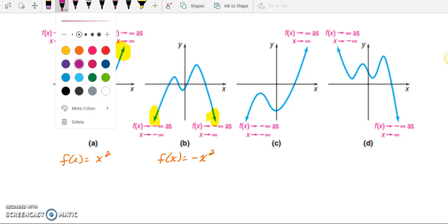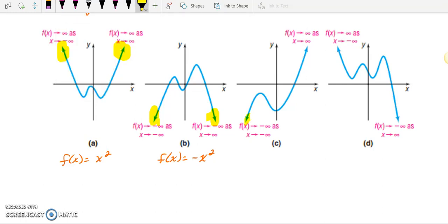Now let's think of a function that has end behavior such as this. The function that comes to mind is f of x equals x cubed. And finally, such as this last one, the function is f of x equals negative x cubed.